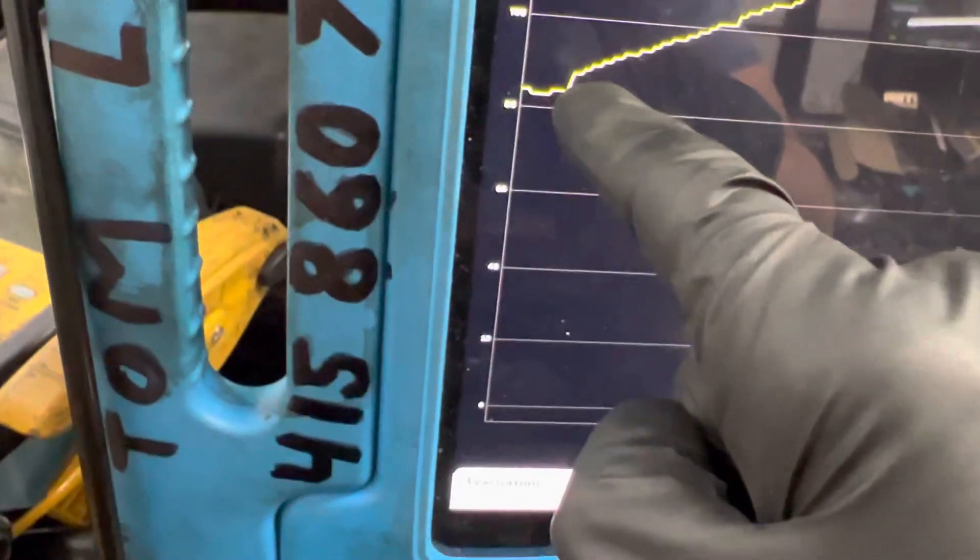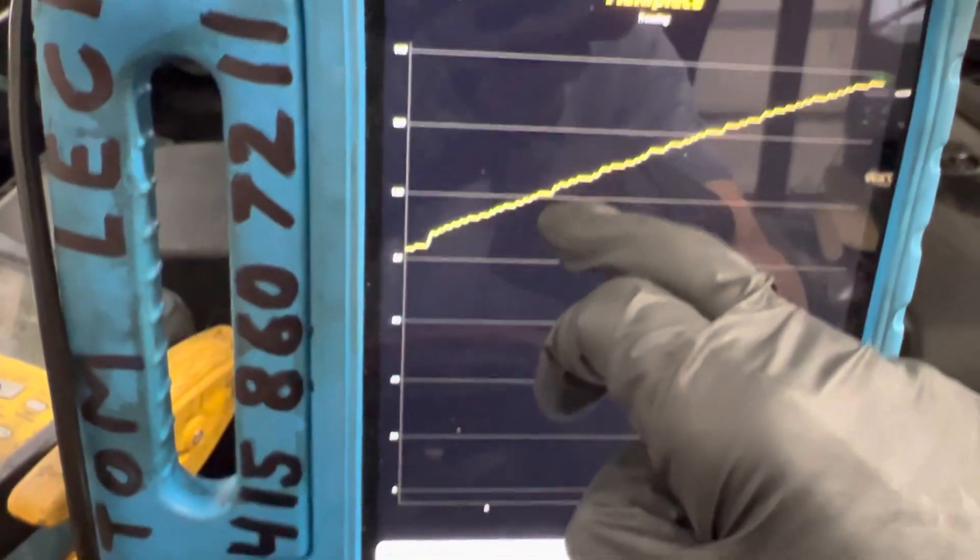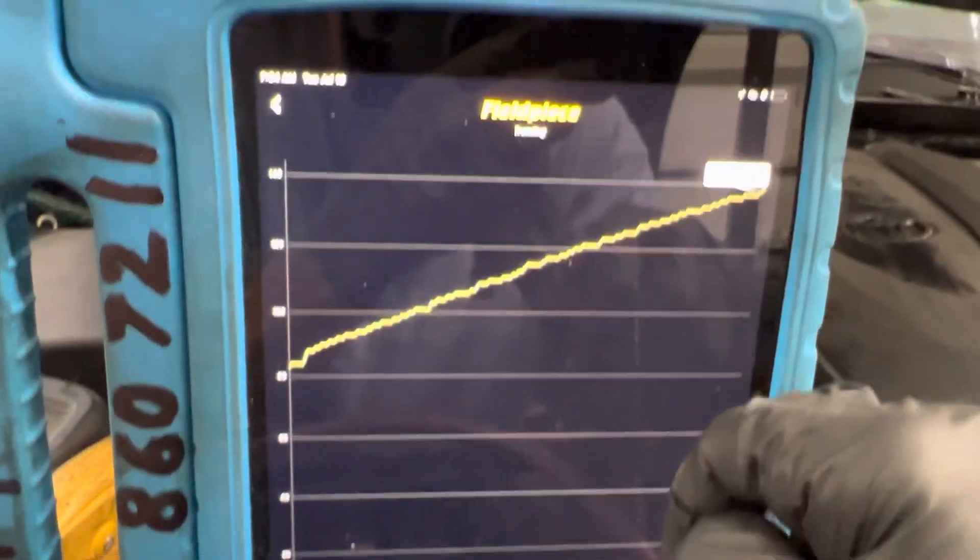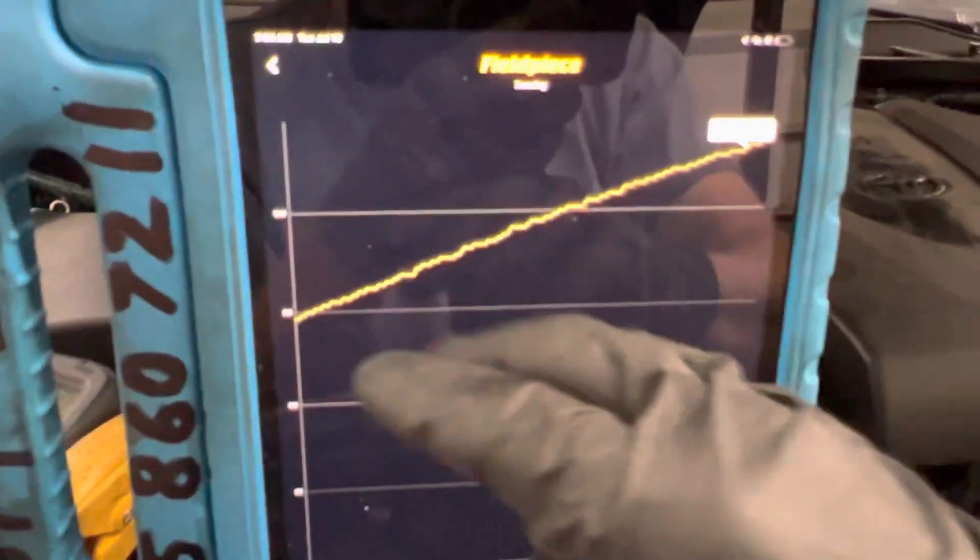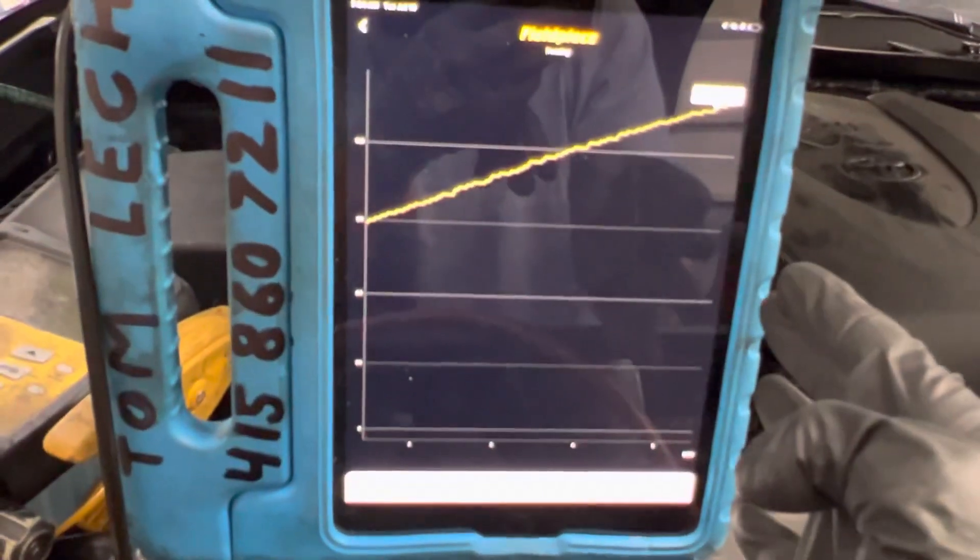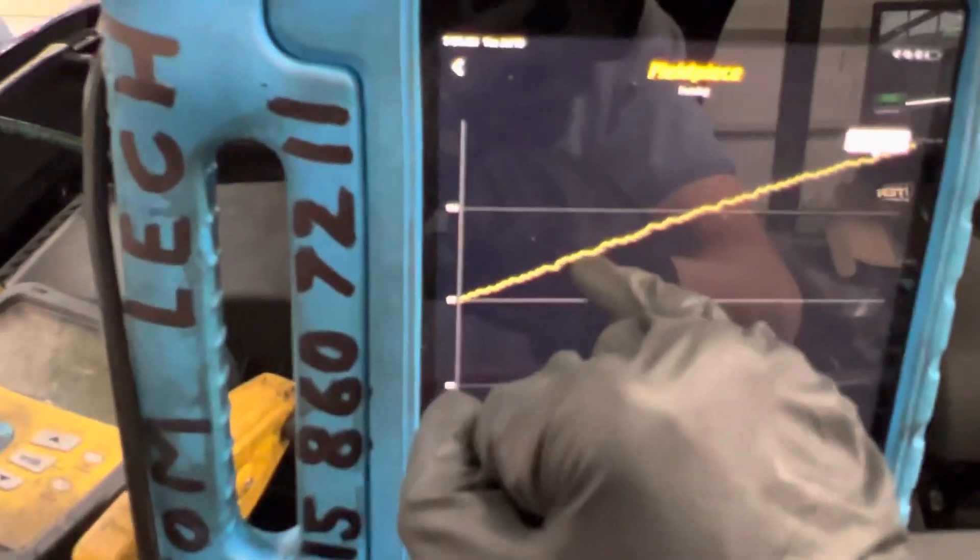Right here where you see the rise, that's where I turned off the vacuum source. There's this gradual increase and we're up to almost 140 microns now - 138 microns right there.